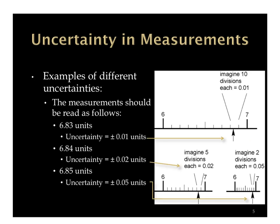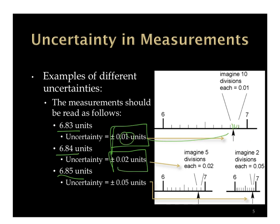So our examples give us 6.83, 6.84, and 6.85. These values tell you the uncertainty. With the first ruler where we could place all those little dashes, we could go to the 0.01's place. With the second, since we could only do half increments, we go to 0.02's. And with the third, where it's either in the middle or the next one up, the uncertainty is by 0.05's.